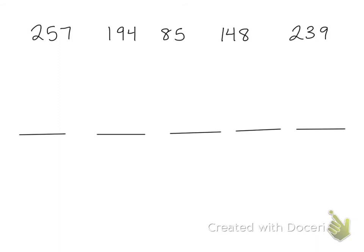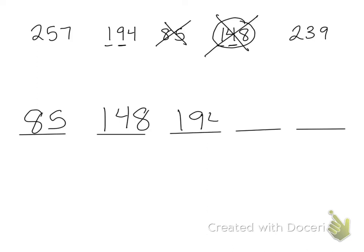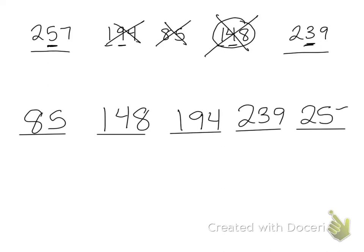I have some more numbers to organize. My smallest number is 85, so I put that first and cross it off. Looking at the hundreds, 140 is the next smallest, then 194. Now I need to figure out which is bigger between 257 and 239 — I look at the tens place and five is bigger than three, so my next number is 239 and then 257. The median of these numbers is 194, the one right in the middle.